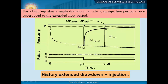For buildup after a single-rate drawdown, an injection period of q is supposed to extend the flow period. This is what is happening — extended drawdown is considered. This concept is useful particularly in convolution and deconvolution, which we will come to afterwards. We are trying to get a ratio of pressure and particularly the flow.